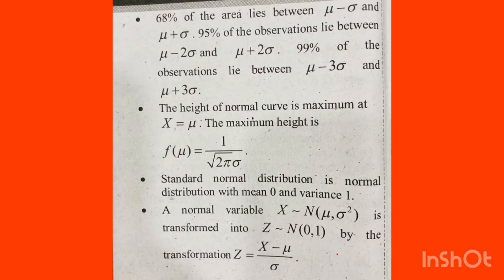68% of the area lies between mu minus sigma and mu plus sigma. 95% of observations lie between mu minus 2 sigma and mu plus 2 sigma. 99% of observations lie between mu minus 3 sigma and mu plus 3 sigma.